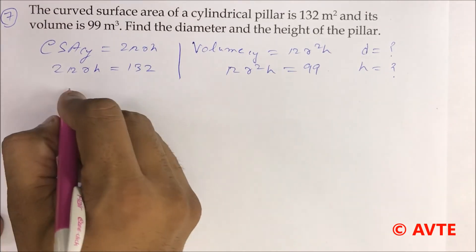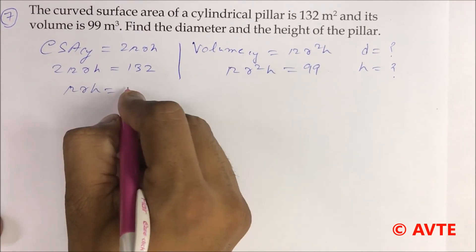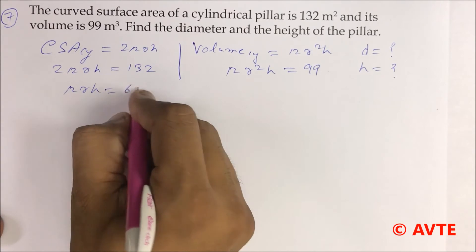So 2πrh equals 132. I'll find the value of πrh, that is 132 divided by 2, which equals 66.